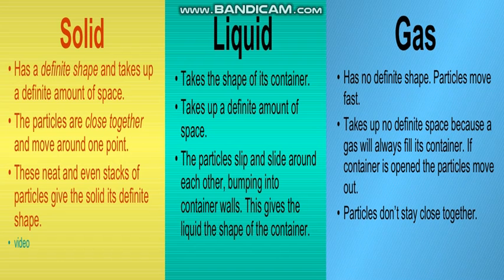So let us summarize. Solid: fixed shape and fixed volume. Liquid: fixed volume but shape is not fixed. Gas: no definite shape and no definite volume. These are all the three states of matter. Thank you.